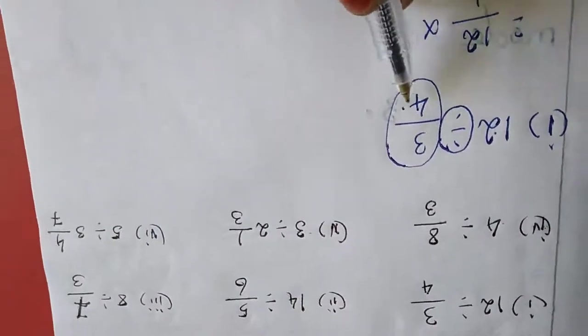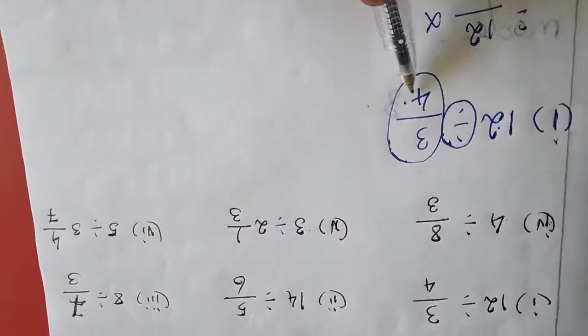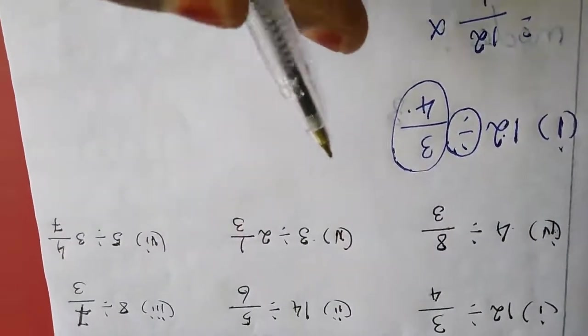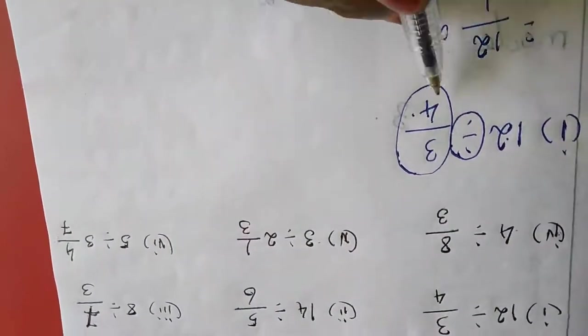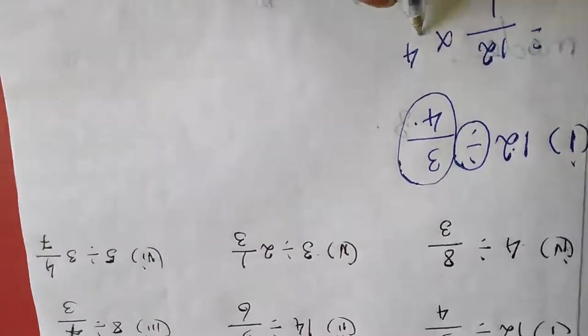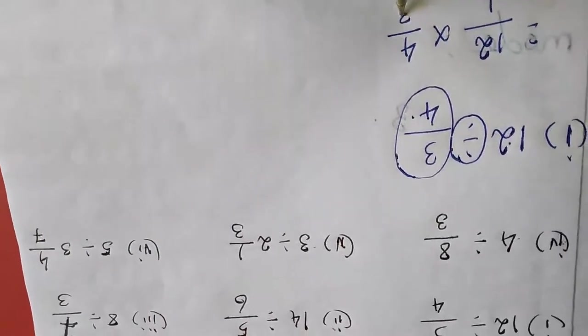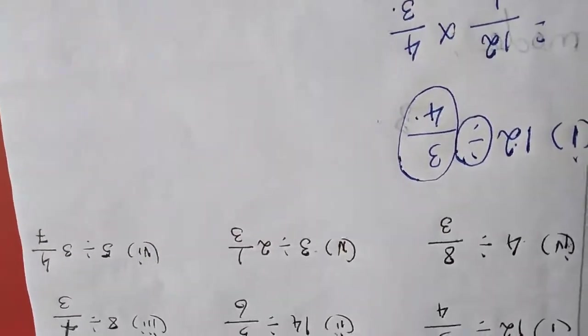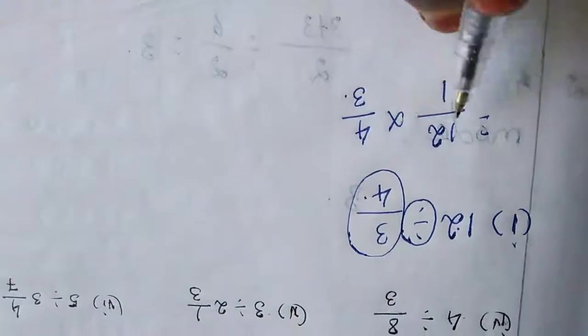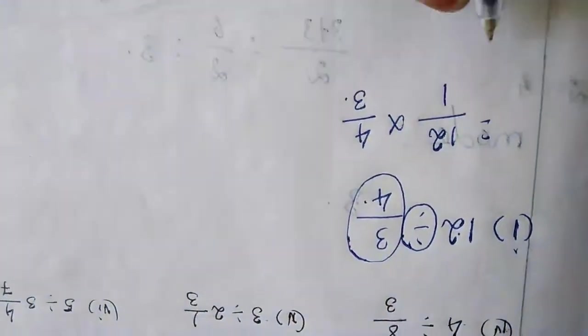Reciprocal means the numerator becomes the denominator and the denominator becomes the numerator. So the reciprocal of 3/4 is 4/3. That's the reciprocal. Now you have to multiply.